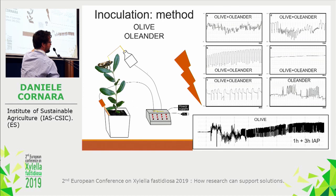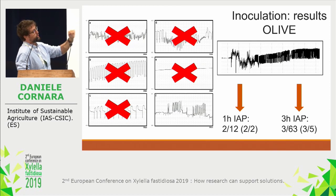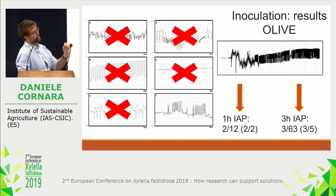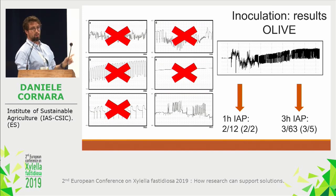On oleander, we did the waveform interruption experiment and had the chance to stop the behavior during the spikelet burst. Results on olive: none of the Philaenus tested during stereotypical patterns caused inoculation. For the one-hour inoculation access period, we got two inoculations — only from the two Philaenus that performed the spikelet burst. For the three-hour period, we got three inoculations from the only five Philaenus that performed the spikelet burst.